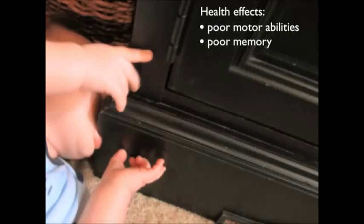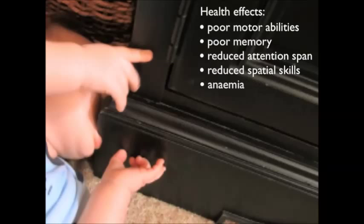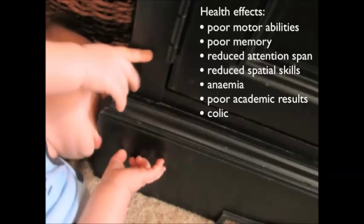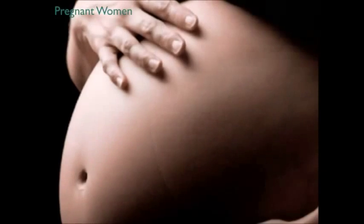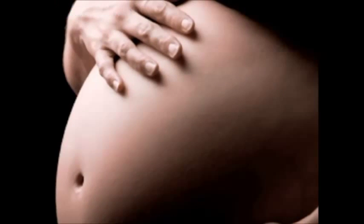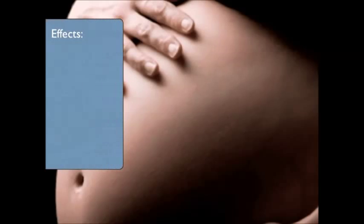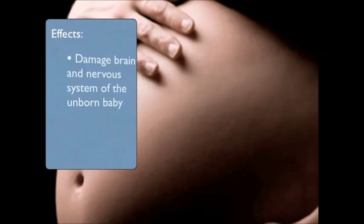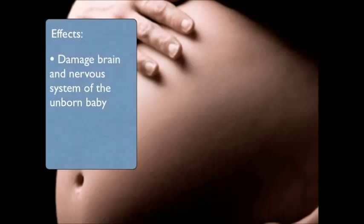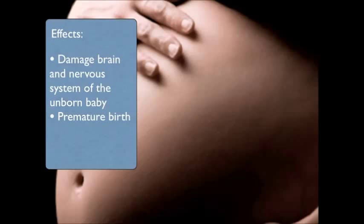The health effects on children include poor development of motor abilities and memory, reduced attention span, reduced spatial skills, anemia, poorer performance at school, colic, gastric problems and behavioural problems. The risk is very high for pregnant women in terms of mental development. Exposure to lead can be harmful because the unborn baby is exposed to lead in the mother's blood, leading to impaired learning. Complications from high levels of exposure include premature birth, low birth weight, or even miscarriage or stillbirth.